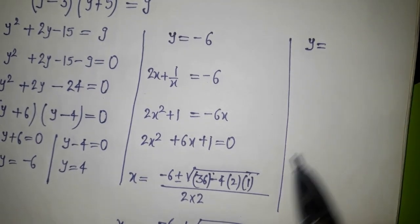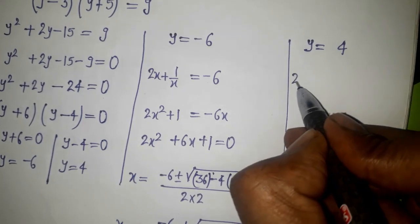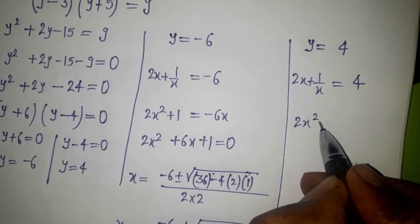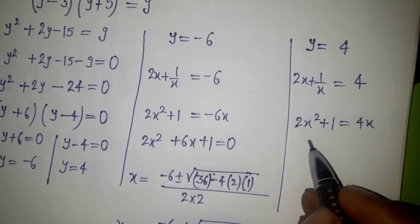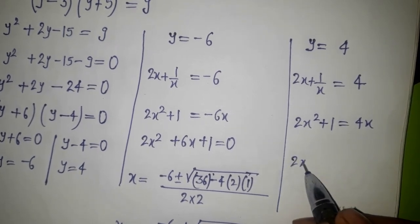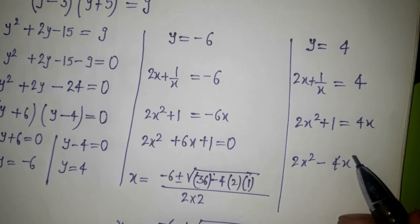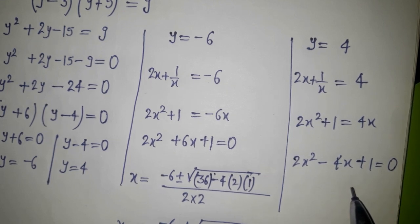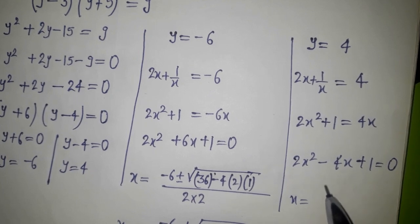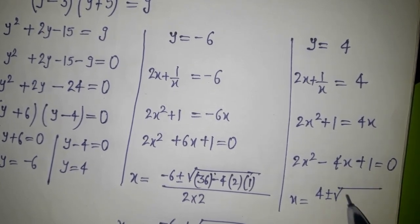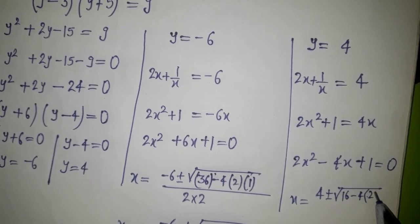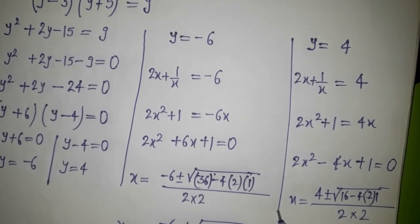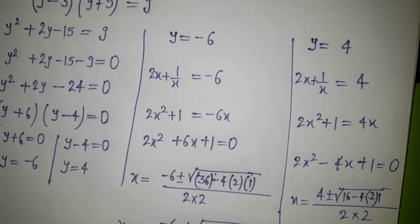For y = 4: since y = 2x + 1/x, we write 2x + 1/x = 4, which gives 2x² + 1 = 4x. Rearranging, 2x² - 4x + 1 = 0. Applying the quadratic formula: x = (4 ± √(16 - 8)) / 4.